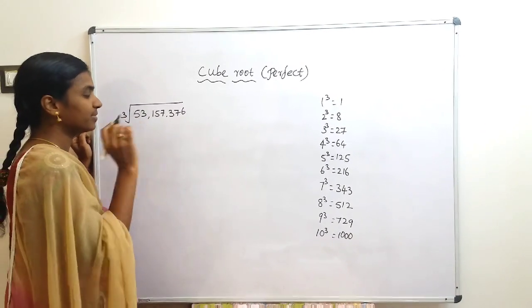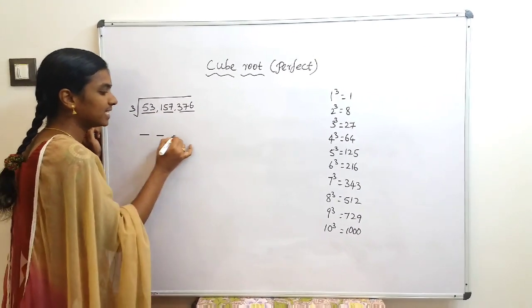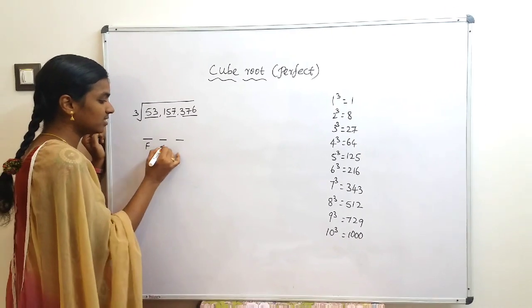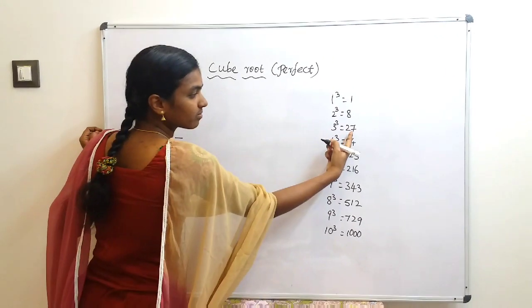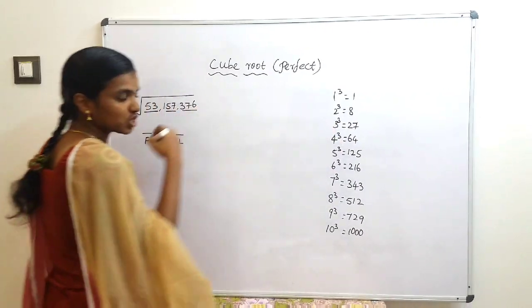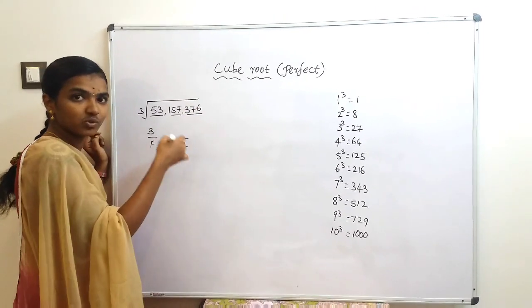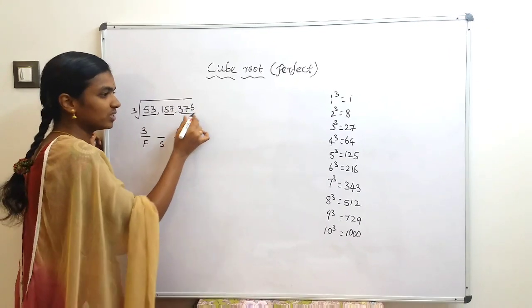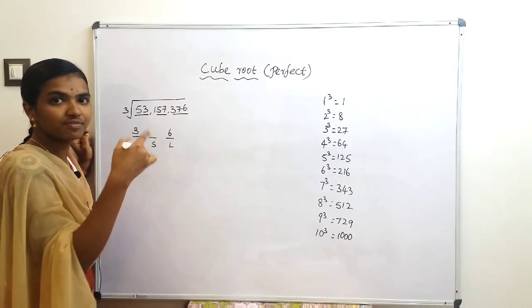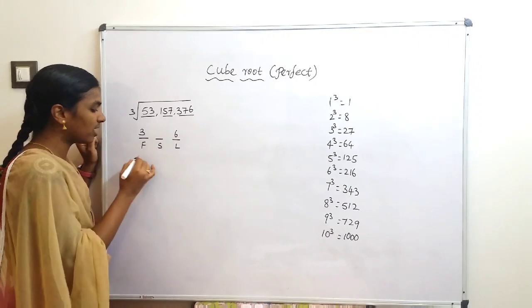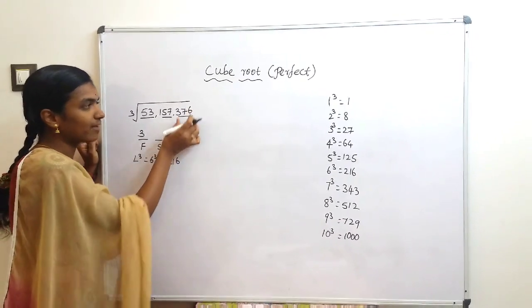Now the eight-digit number example. Split right to left in groups of three digits, giving three parts, so the answer is a three-digit number. For the first digit: 53 lies between 27 (3³) and 64 (4³), so the lower cube root is 3. For the last digit: the last digit is 6, and the cube whose last digit is 6 is 6³, so the last digit of our answer is 6.